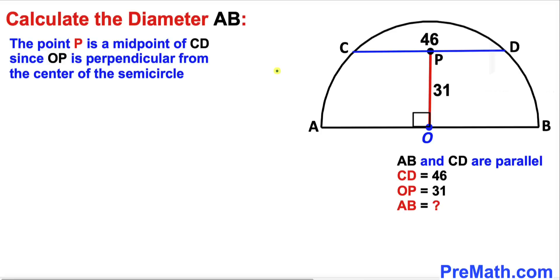Let's make an observation. We can see that point P is the midpoint of chord CD because line segment OP is perpendicular from center O. Therefore, line segment CP is half of chord CD, which is 23 units. Furthermore, this angle is 90 degrees.